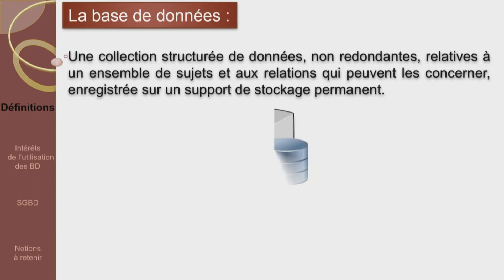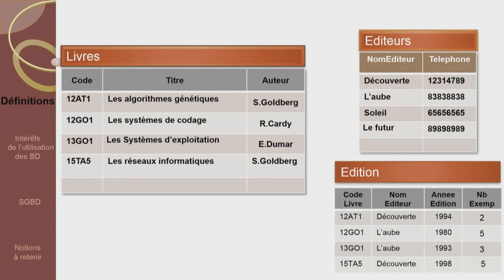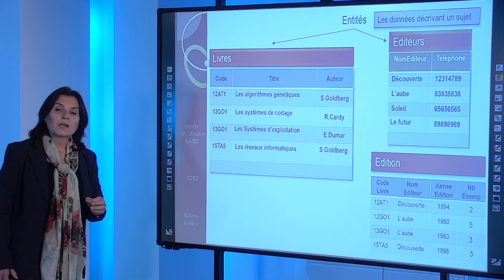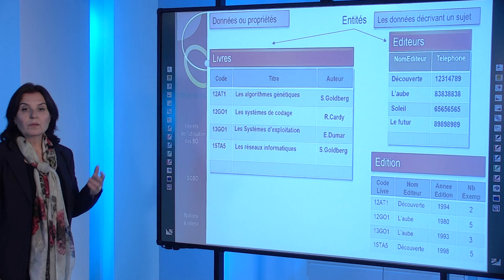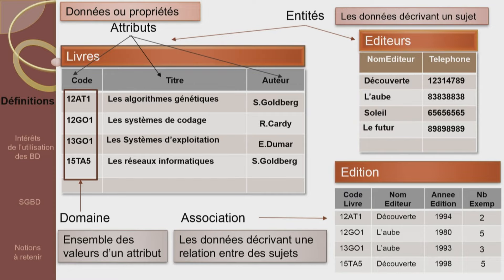D'après cela, une base de données sera donc une collection structurée de données non redondantes, relatives à un ensemble de sujets et aux relations qui peuvent les concerner. Les données sont enregistrées sur un support de stockage permanent pour garantir leur disponibilité. Les données d'une base de données sont regroupées suivant leur appartenance à un sujet ou à une activité commune. Les données décrivant un même sujet forment une entité, décrite par un ensemble de données appelées attributs. L'ensemble des valeurs d'un attribut forme un domaine. Les données décrivant une liaison entre les différents sujets forment une association.